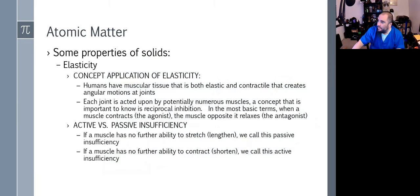Concept application of elasticity: humans have muscular tissue that's both elastic and contractile and creates angular motion at joints. Each joint is acted upon by potentially numerous muscles. Our shoulder joint, when we make any simple movement, is being acted upon by multiple muscles. Just to do shoulder abduction, we have a ton of muscles working because not only is the humerus moving superiorly, but the scapula has to rotate as well.